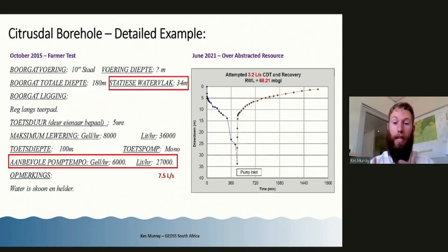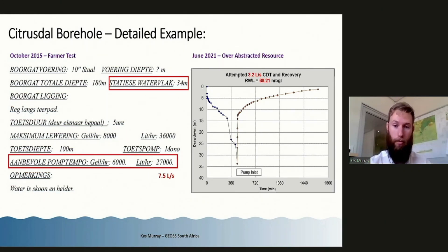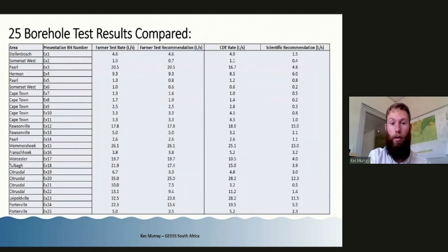We tried to run a constant discharge test at less than half what the recommended sustainable rate was based on the pharma test. The lowest we could get on the pump we brought to site was 3.2 liters per second, and that couldn't even last more than about seven hours before failing and reaching pump inlet. This borehole has been totally over-abstracted based on the recommendations of one of these tests, which are not valid.